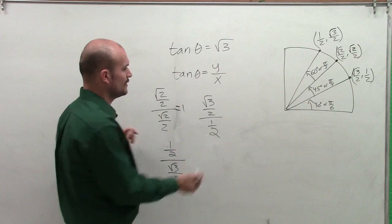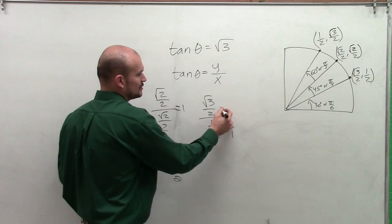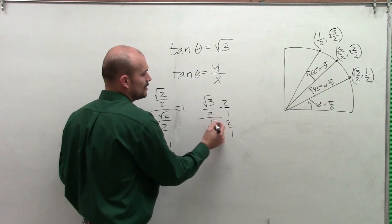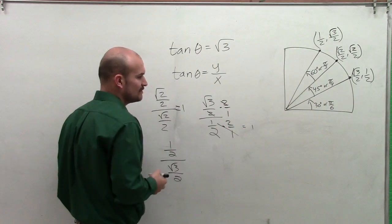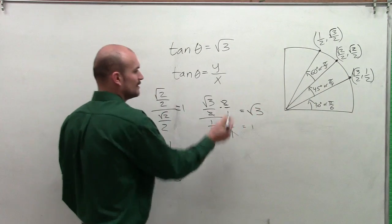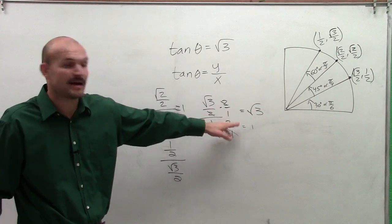So over here, what we know is you can multiply by the reciprocal to get rid of your fractions, and what you notice is that multiplies out to 1. And then this, my 2's will divide out to 1, and I'm just left with the square root of 3. So therefore, that's actually going to be my answer.